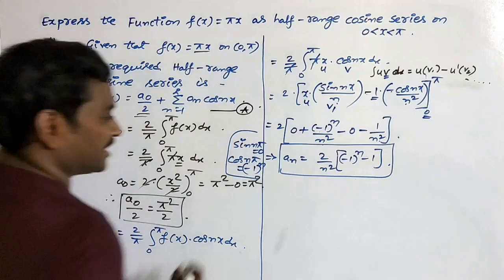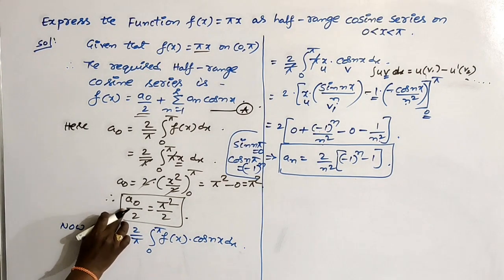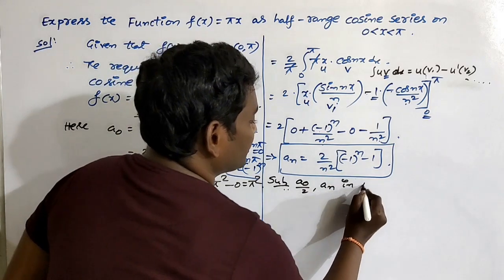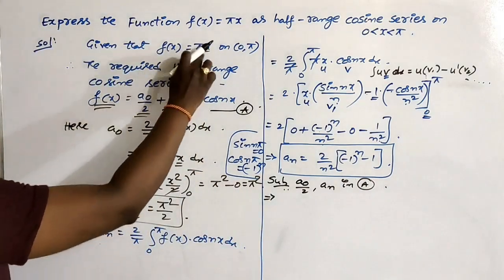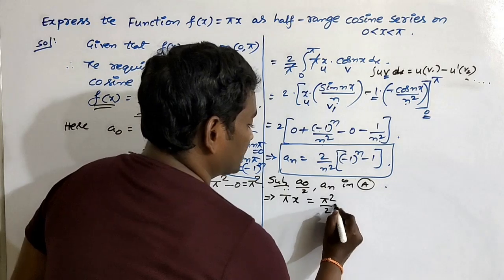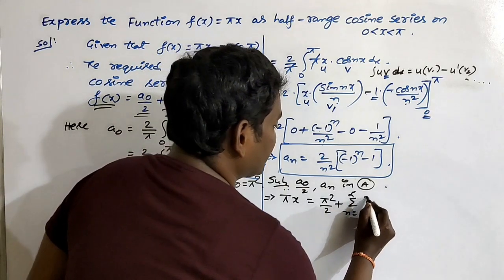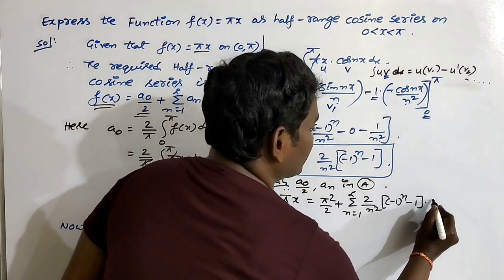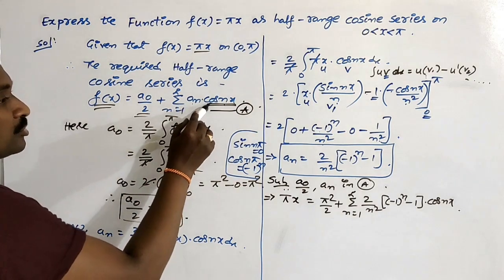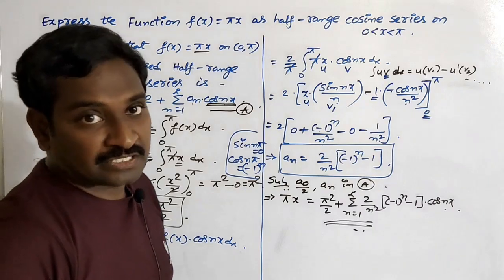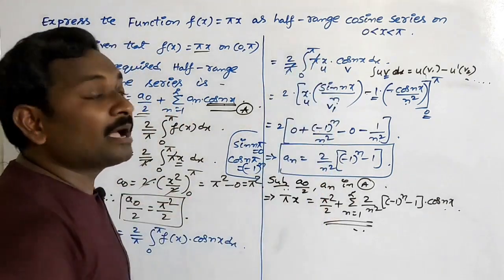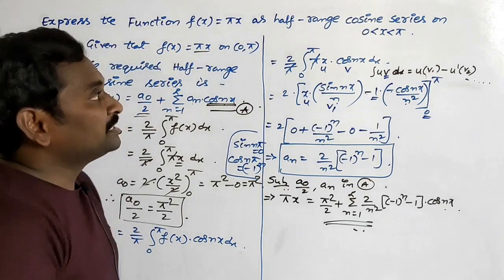Substituting the values of a₀/2 and aₙ into the expansion, we get: f(x) = πx = π²/2 + summation n=1 to infinity of (2/n²)·[(−1)ⁿ − 1]·cos(nx). This is the required half-range cosine series. Since expanding the summation gives only cosine terms, this is called the cosine series of the given function on the interval (0, π). In the next video, more examples on this half-range series will be covered.